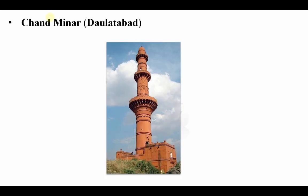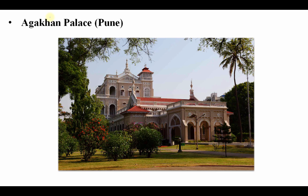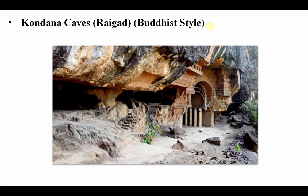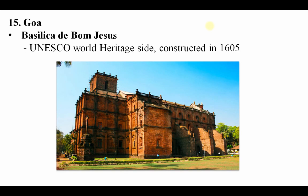Chand Minar is in Daulatabad, Maharashtra — note that Charminar is in Hyderabad, while this is Chand Minar. Aga Khan Palace is a very important place in Pune, Maharashtra. Bibi Ka Maqbara is known as the 2nd Taj Mahal and is in Aurangabad — it was made by Azam Shah, son of Aurangzeb, in memory of his mother Banu Begum, who was the wife of Aurangzeb. Kondana Caves, located in Raigad, are made in Buddhist style and are also in Maharashtra.